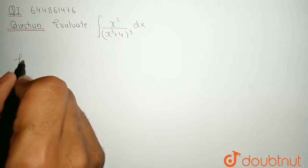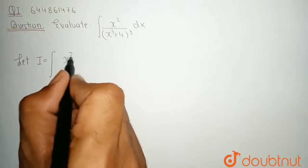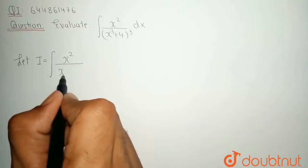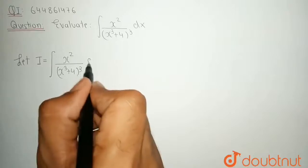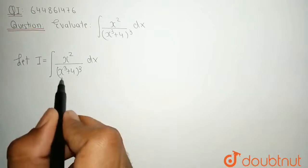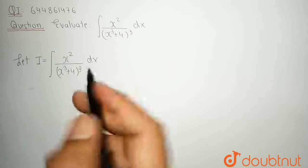Let us consider the value of integral is I. So, I is equal to integration of x square upon x cube plus 4 whole cube dx. As we know that the differentiation of x cube is 3 times x square. In this way we get this x square.